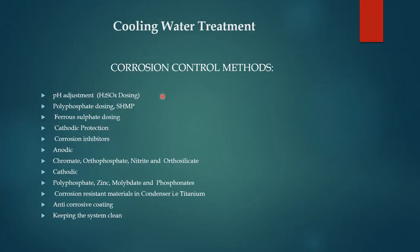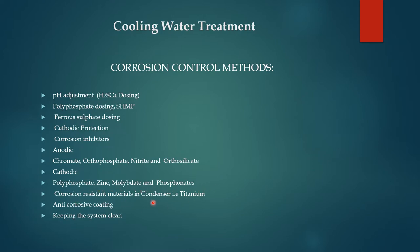Corrosion control methods include: pH adjustment using H₂SO₄ dosing (sulfuric acid used to maintain pH), polyphosphate dosing, sodium hexametaphosphate dosing, ferrous sulfate dosing, and cathodic protection. Corrosion inhibitors include anodic inhibitors such as chromate, orthophosphate, nitrate, and orthosilicate, and cathodic inhibitors such as polyphosphate, zinc molybdate, and phosphonate.